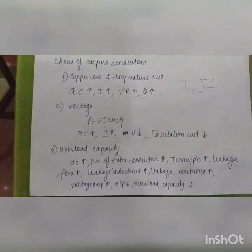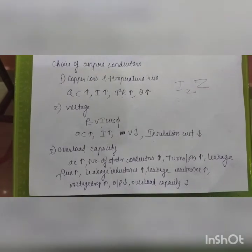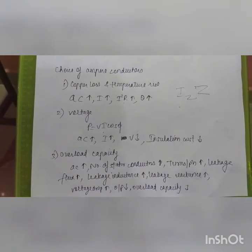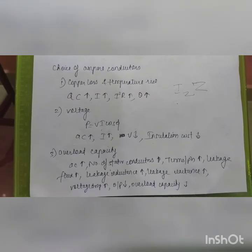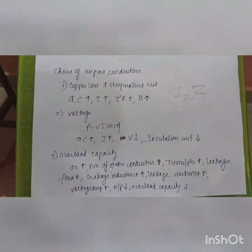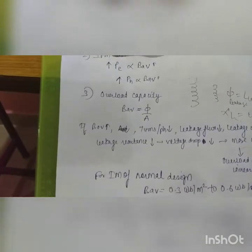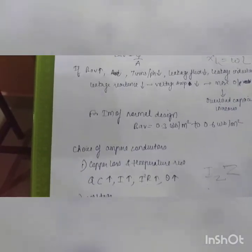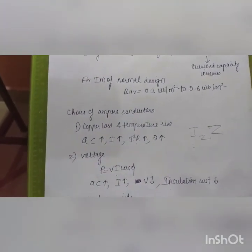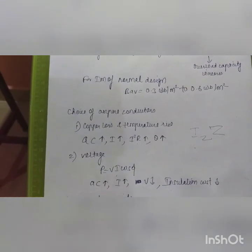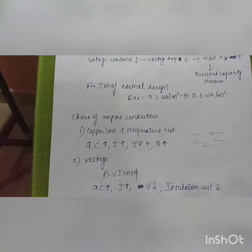The two key factors are average flux density and average current density. If average current density (AC) is higher, copper loss increases, but overall capacity increases while insulation cost decreases. We must carefully select both average flux density and average current density in the induction motor design. In the next video, we will understand the selection of stator slots and different types of stator slots used in induction motors.